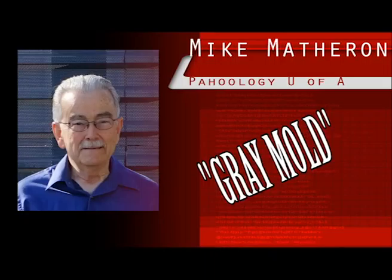The appearance of a fuzzy grayish growth on lettuce or onion usually signals the presence of Botrytis cinerea, the fungus responsible for gray mold. In the desert southwest, gray mold can be a concern for lettuce and onion growers, in addition to anyone who enjoys eating strawberries, as this fungus can rapidly turn them into furry-looking inedible fruit.